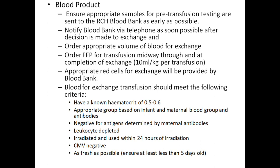Ensure appropriate samples for pre-transfusion testing are sent to the blood bank as soon as possible. Notify the blood bank via telephone as soon as the decision to exchange transfuse is made. Order the appropriate volume of blood and fresh frozen plasma for midway through and at completion of the exchange. Blood for exchange transfusion should meet the following criteria: hematocrit of 0.5 to 0.6, appropriate group based on infant and maternal blood group and antibodies, negative for the antigen determined by maternal antibodies, leukocyte depleted, irradiated and used within 24 hours of irradiation, CMV negative, as fresh as possible, and less than 5 days old.